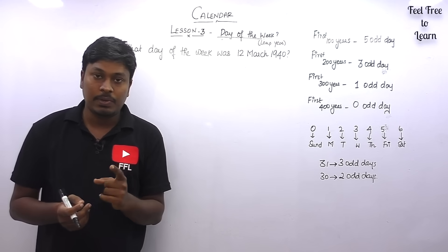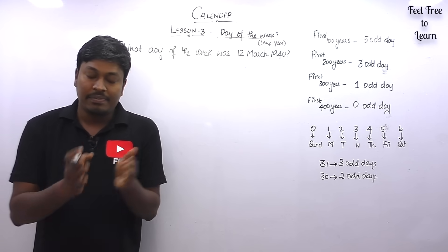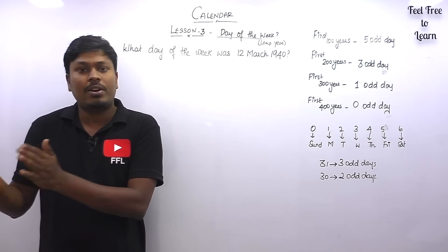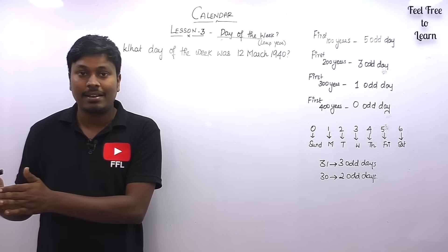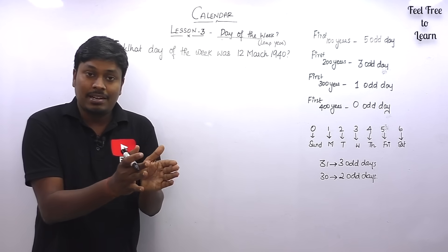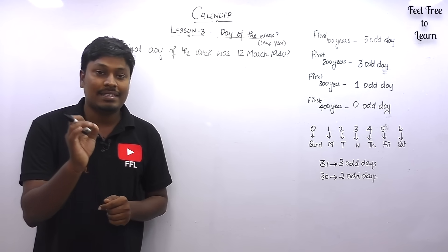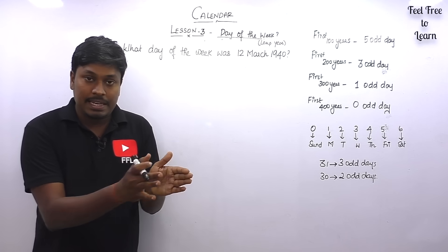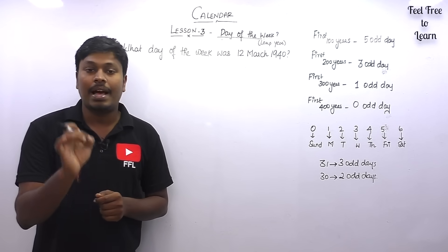In lesson number 1 I clearly explained the difference between a leap year and an ordinary year. If it is a leap year, the last two digits will be divisible by 4. If it is an ordinary year, the last two digits will not be divisible by 4. The major difference is that an ordinary year has only 365 days with 28 days in February, while a leap year has 366 days with 29 days in February.